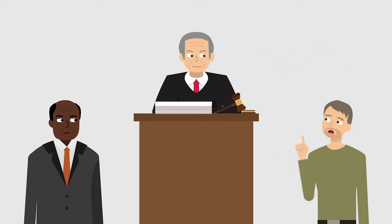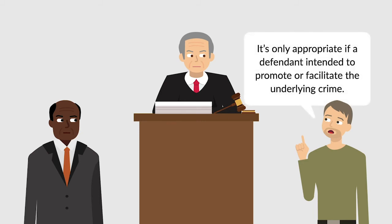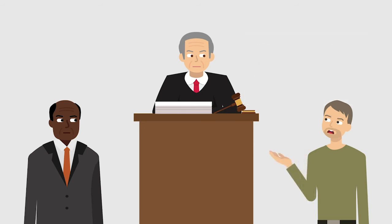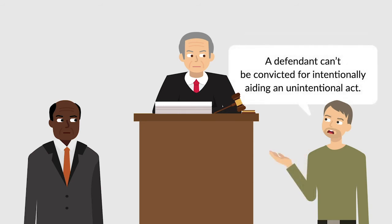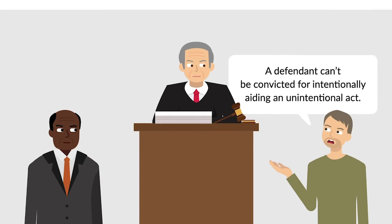According to Roebuck, accomplice liability is only appropriate if the defendant intended to promote or facilitate the commission of the underlying crime. But third-degree murder is an unintentional killing. Accordingly, Roebuck asserted that a defendant can't be convicted for intentionally aiding an unintentional act.